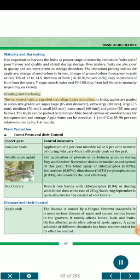Grading and Packing: The harvested fruits are graded according to size and color. In India, apples are graded in 7 size grades: super large (85 mm diameter), extra large (80 mm), large (75 mm), medium (70 mm), small (65 mm), extra small (60 mm), and pitu (55 mm and below). The fruits can be packed in telescopic fiber board cartons or wooden boxes for transportation and storage. Apple fruits can be stored at −1.1 to 0°C at 85–90% relative humidity for 4 to 6 months.